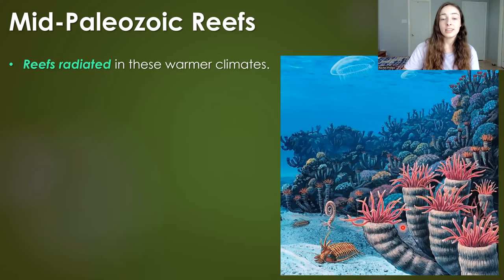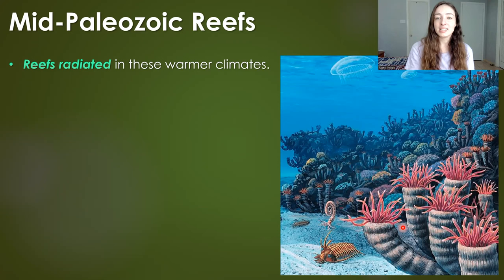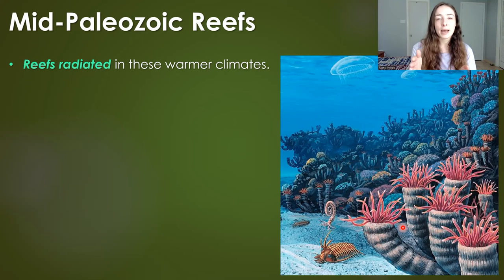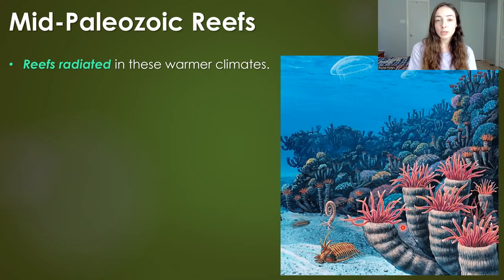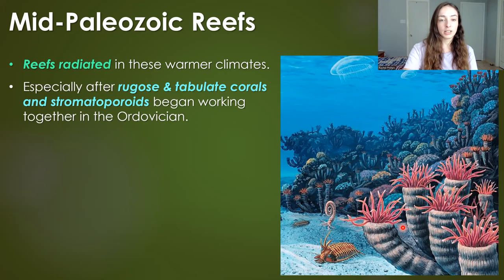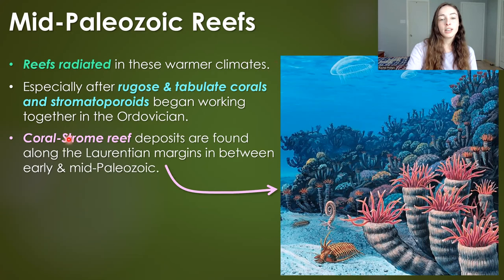Warming and drying was rampant, and this allowed reefs to radiate. Reefs during the Early Paleozoic were not super large or successful because the major reef builders from the early Cambrian went extinct in the middle Cambrian, and nothing really came back until the Ordovician. But the warm temperatures of the mid-Paleozoic brought back reefs, and they were really successful — especially those built by rugose and tabulate corals and stromatoporoids. These reefs were called coral-strome reefs and their deposits can be found along all the margins of Laurentia.